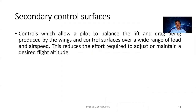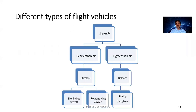As far as secondary control surfaces are concerned, there are many: flaps, slats, spoilers, and in some cases even trim tabs. Different flight vehicles are categorized as heavier-than-air (airplanes) and lighter-than-air (balloons).